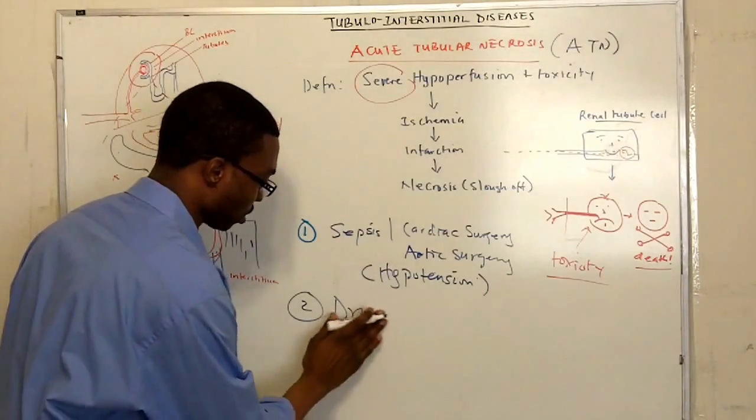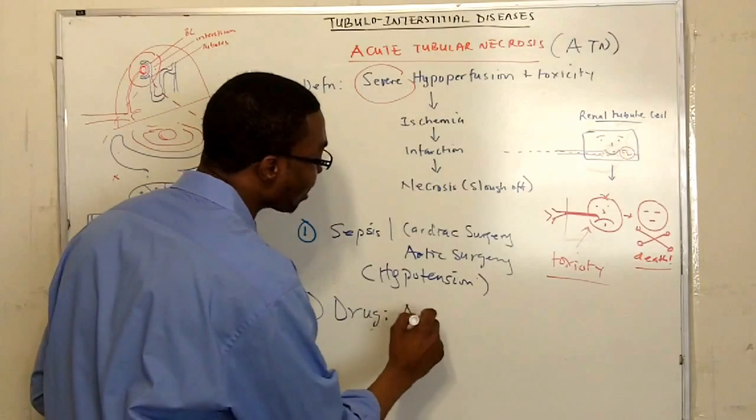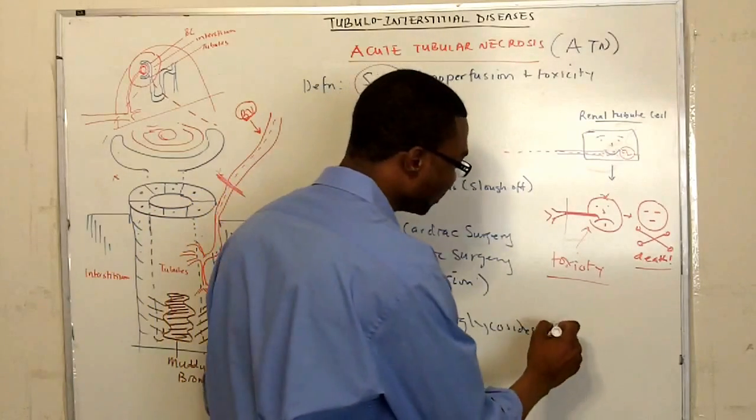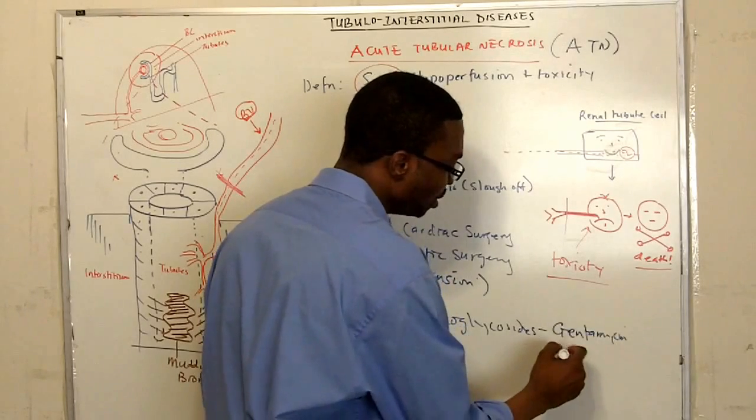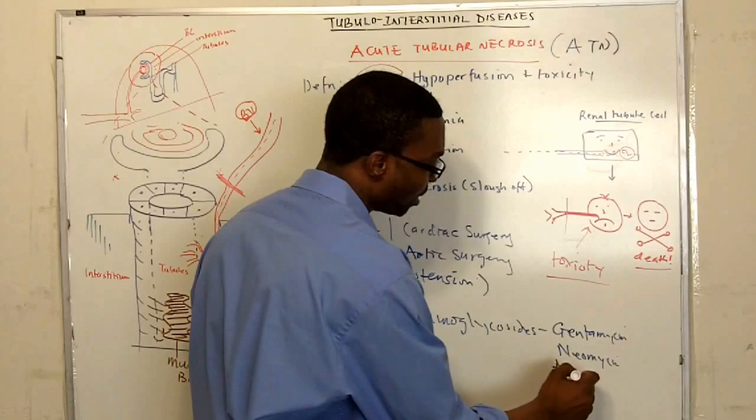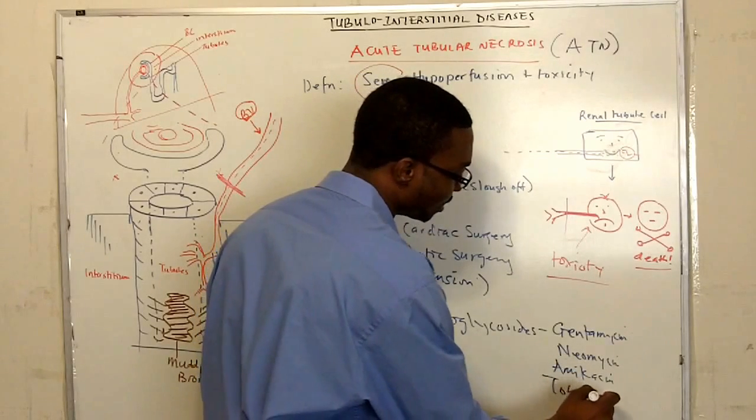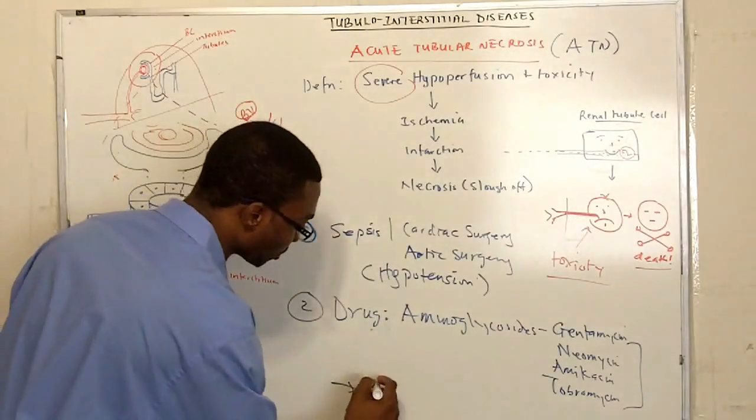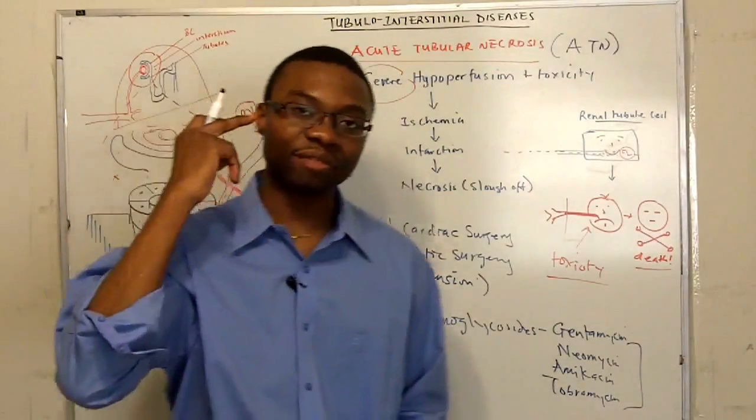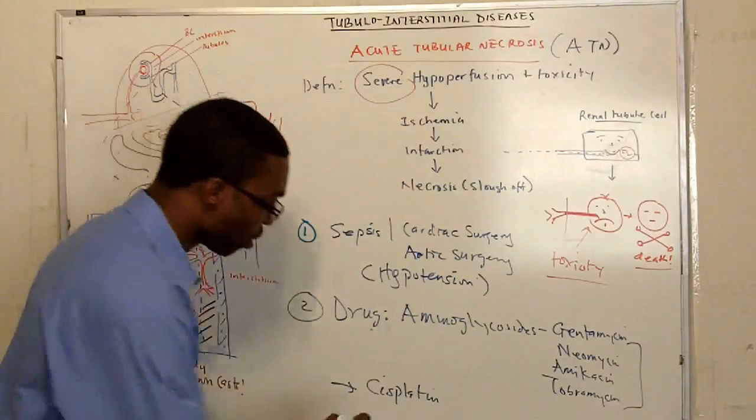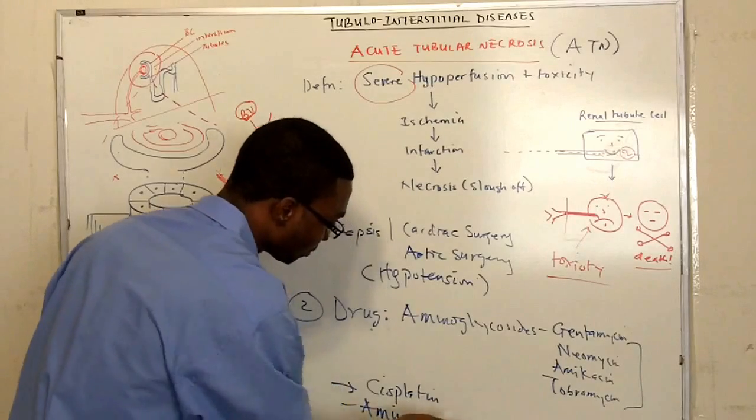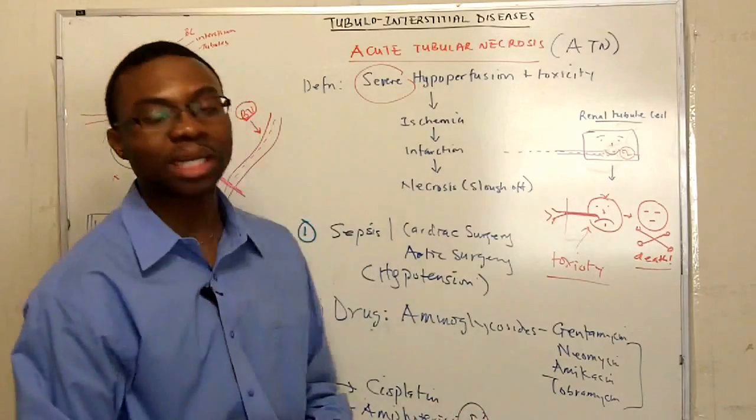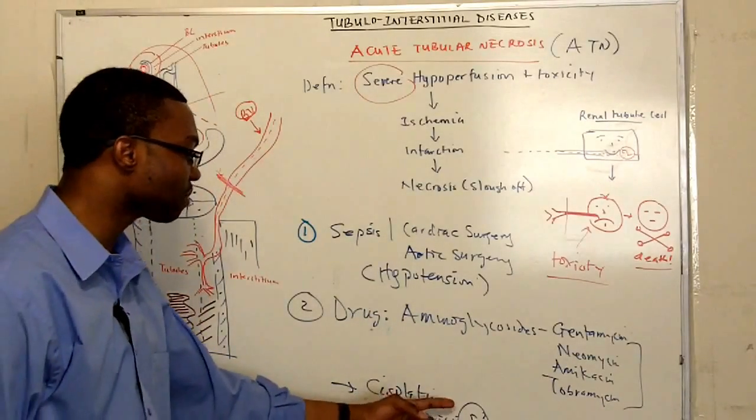Drugs. What drugs are we talking about? Aminoglycosides. Aminoglycosides, like what? They're the mean glides, right? The gentamicin, neomycin, amikacin, tobramycin. These drugs, aminoglycosides, they're very nephrotoxic. Guess who else? Cisplatin. The guy that makes you deaf and also damages your kidneys. It's nephrotoxic. What about the drug we use for patients with fungal infection? Amphotericin B. The B is going to blow up your kidneys.